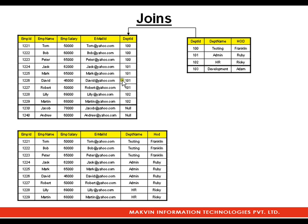I am matching department ID 100, writing records like Tom–Testing, Franklin–100, 101, 102, and so on. If I observe carefully, I have all the matched rows from the left table and matched rows from the right table. Records 1230 and 1240 are unmatched and not included; Development is also unmatched and not included. This is nothing but an inner join.